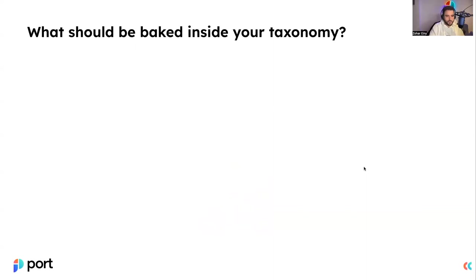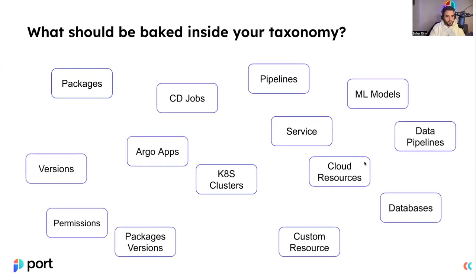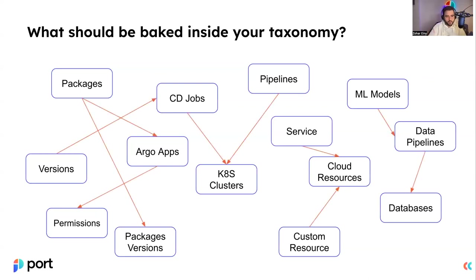What should be baked inside your taxonomy — into your software catalog? The most common component, and probably the one you'll start with, is microservices. You might also want to include packages, Kubernetes clusters, pipelines, and many other types of components. You might look at this list and recognize commonalities, but I'm sure there are components not on this list — like your custom resources — that you should be able to represent as well. All these kinds of entities have dependencies between them, because in a DevOps era you have services running on environments, environments using cloud resources hosted on different cloud accounts, and so on.